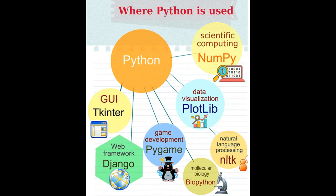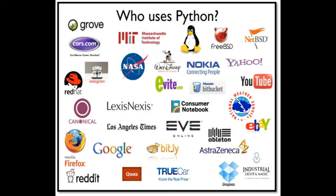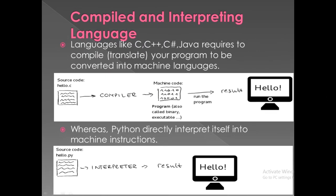Let's look at compiled versus interpreted languages. Languages like C, C++, C#, and Java require you to compile your program to be converted into machine language — the source code is first compiled into machine code and then the program runs. Whereas Python directly interprets itself into machine instructions, meaning the source code gives the result at runtime itself.